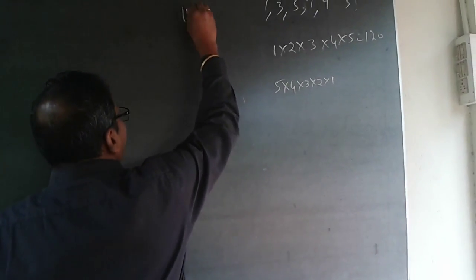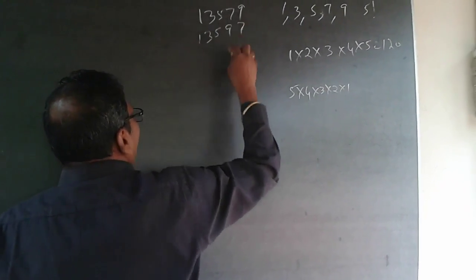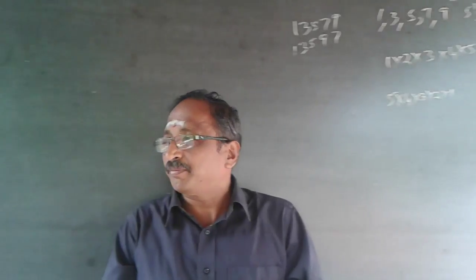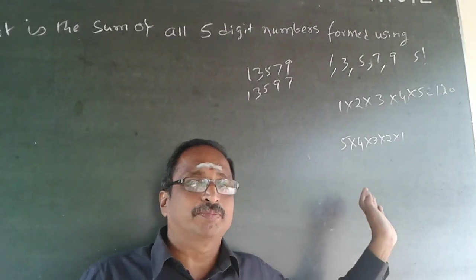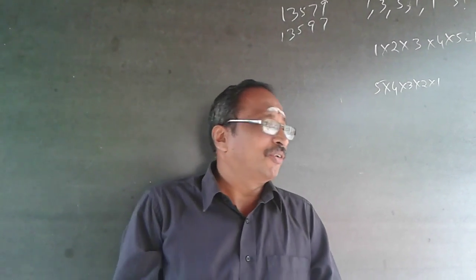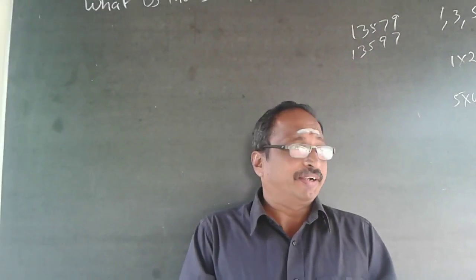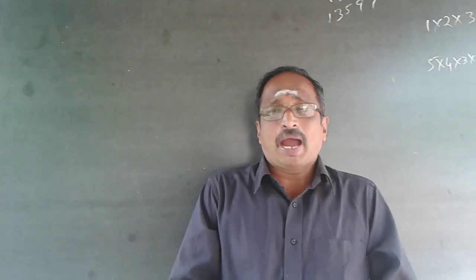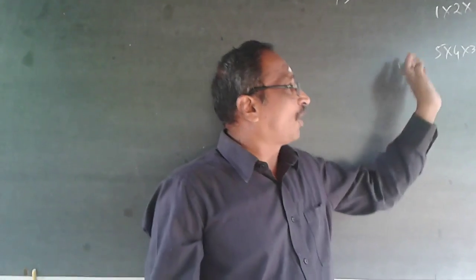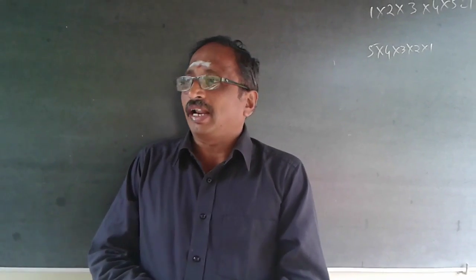The first number that can be formed is 13579, the next will be 13597, and so on. You'd have to write all 120 numbers and total them — that's a very tough ask. In an aptitude exam you can probably do only one such question that way, but in aptitude interviews the sky is the limit. You should know how to handle this type of question efficiently.